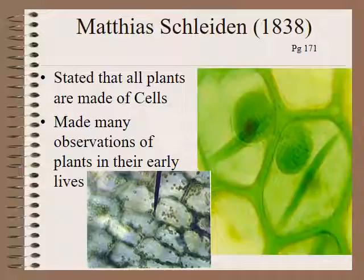Another gentleman around the same time, Matthias Schleiden, around 1838, had done enough observation of plants to conclude that all plants were made up of cells. Every single time he looked at a plant, he saw cells. He liked to look at plants very much in the early stages of their lives, when they were just starting to grow, and he always noticed that plants always started from a single cell.